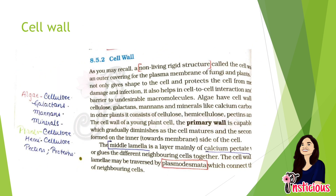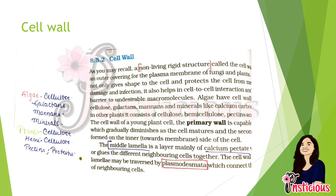The cell wall is a non-living rigid structure that forms the outer covering of the plasma membrane in fungi and plants. In algae, it is made of cellulose, galactins, mannose, and minerals, whereas in plants it is made up of cellulose, hemicellulose, pectins, and proteins. This is the most important thing to remember from this paragraph.